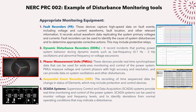Fault recorders are devices that capture high-speed data on fault events. They record voltage and current waveforms, perform fault location detection, and capture element information such as fault type, voltage dip, current dip, harmonics, sequence components, which relay operated, and what type of fault initiated — all as actual waveform data replicating primary system voltages and currents. Fault recorders can identify the cause of system disturbances and determine appropriate corrective action; they may be part of a protective relay or a standalone fault recorder for the entire substation.